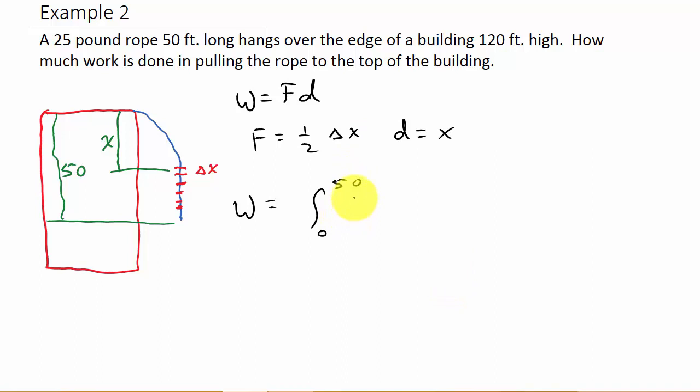And then, that's going to be one half x dx. Remember, delta x is equal to dx. So, you can see here, I've got my force times my distance. And remember, this force times distance, that's the work done for that one piece, however far down it is. And I'm summing all of those pieces up from zero to 50.